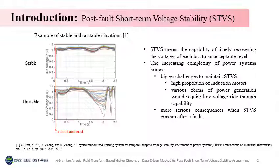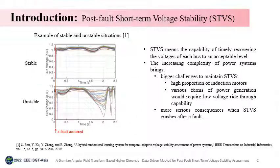Let me introduce the concept of post-fault short-term voltage stability, STVS. As a subtopic of power system stability, STVS means the capability of timely recovering the voltages of each bus to an acceptable level. Because of the increasing complexity of power systems, the occurrence of voltage collapse becomes more likely. Moreover, STVS becomes more difficult to maintain after a fault. As shown on the left, when a fault occurs, in some cases the voltage could return stable, while in others it does not. Thus, the assessment method should distinguish these two situations to allow corresponding emergency measures to precisely intervene in time.